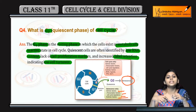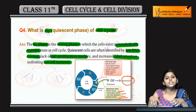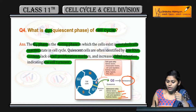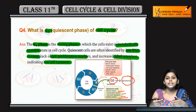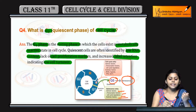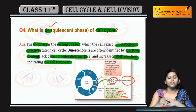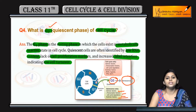What is G0 phase? It is a resting phase. Cells in G1 phase will not continue in the cell cycle if they enter G0. This was the G0, or resting phase.